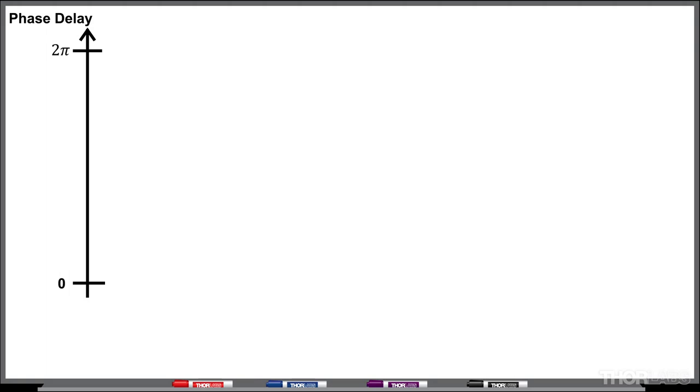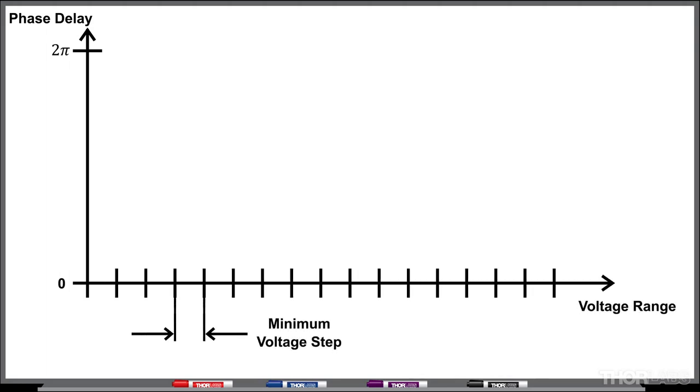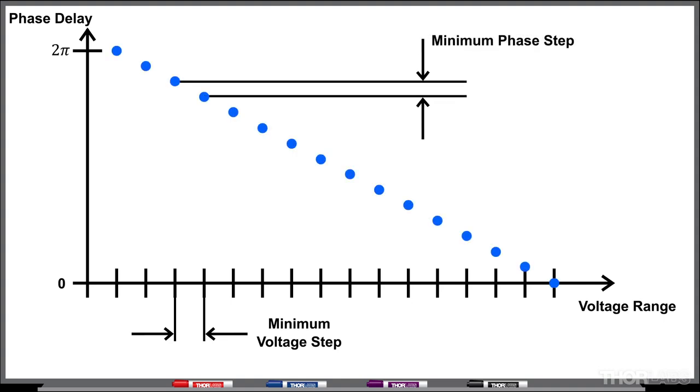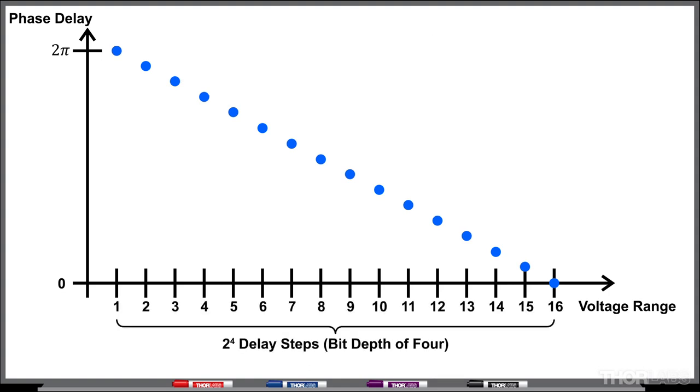SLMs modulate phase delay over a limited range such as 2 pi or 4 pi. The control interface typically divides the total range into discrete steps so that the minimum possible phase change is limited by the minimum step size. Often, the total number of steps is a power of 2 and described by the bit depth. For example, an SLM with a range divided into 256 steps has a bit depth of 8, since 2 to the 8th power is equal to 256.